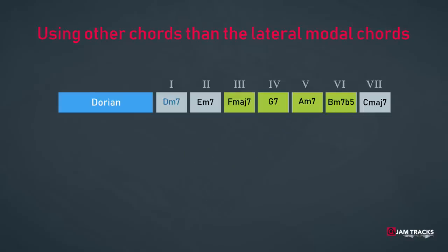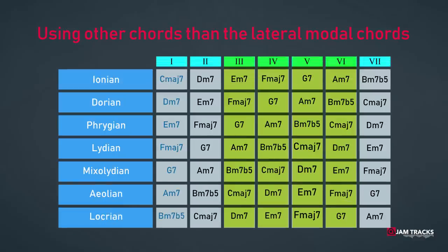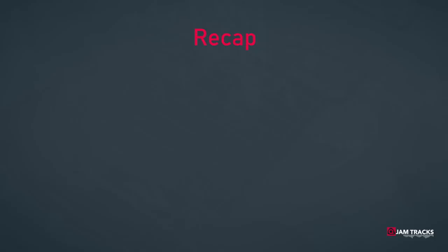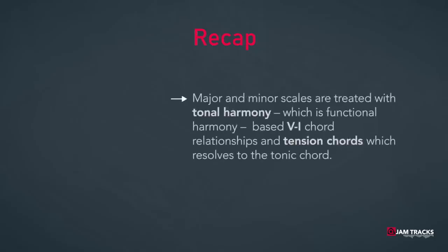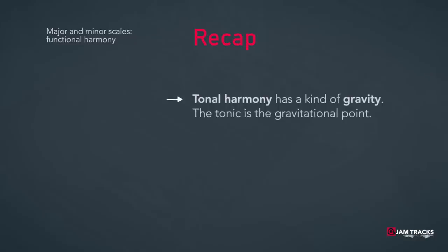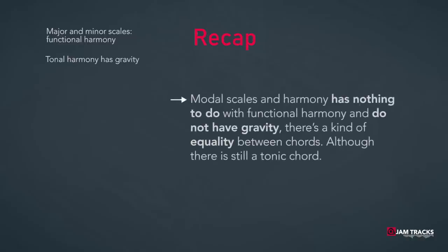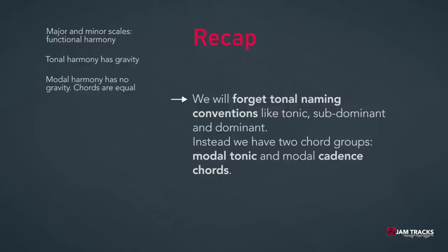What we just did for D Dorian goes for all the modes — the same rules apply. To recap: major and minor scales are treated with tonal harmony, which is functional harmony based on 5-1 chord relationships and tensions that want to resolve to the tonic chord. Tonal harmony has a kind of gravity — the tonic is the gravitational point. Modal scales and harmony have nothing to do with functional harmony and do not have gravity. There's a kind of equality between the chords, although there's still a tonic chord. We will forget tonal naming conventions like tonic, subdominant, and dominant — instead we have two chord groups: modal tonic and modal cadence chords.